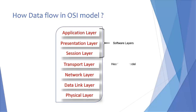Next layer is the transport layer. It is the heart of OSI model and responsible for end-to-end delivery. And the last three layers are known as hardware layers, and these layers deal with the hardware protocols and specifications.